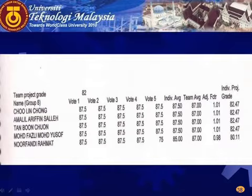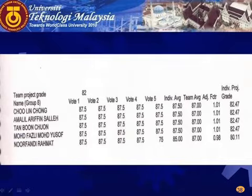This is the adjustment factor I obtained from the peer rating — by taking the individual average and dividing it by the team average, I obtain the adjustment factor. That factor I multiply by the marks I gave them. The technical content is determined by me, and how they cooperate is determined by the peer rating. This is their final grade. Even though they work in a group, their grades are individual grades. That's how I do my assessment — it's a lot of work.